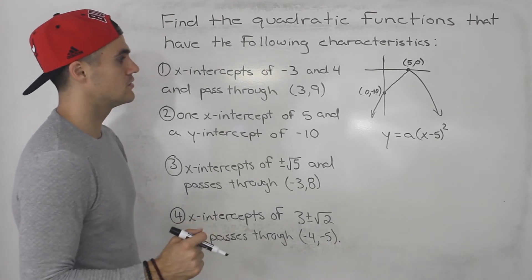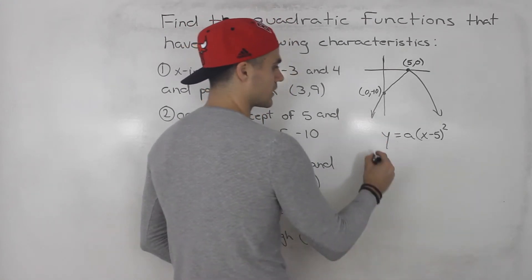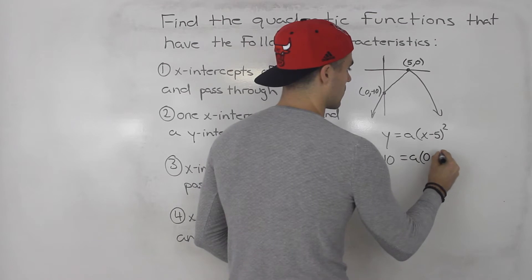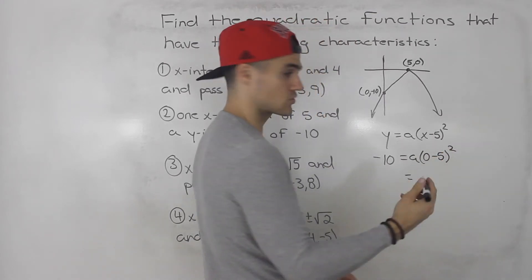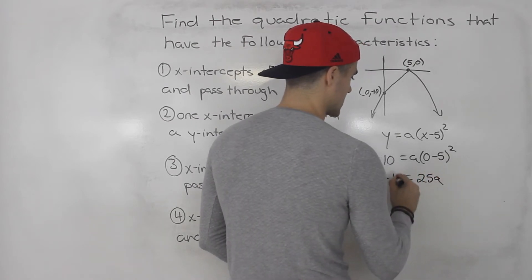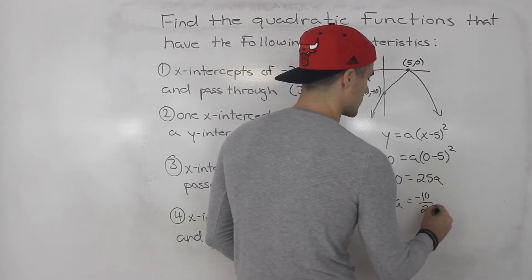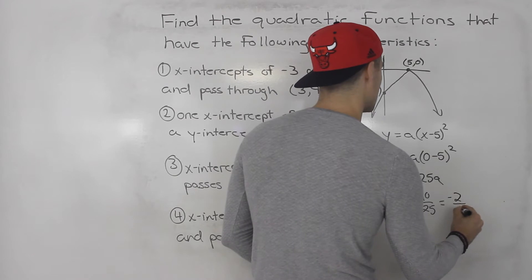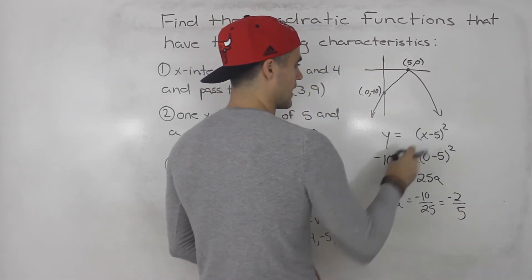From here, solve for the a value by plugging in the coordinate (0, -10): negative ten for y and zero for x. Zero minus five is negative five, squared is 25. So we have negative ten equals 25a, meaning a equals negative ten over 25, which simplifies to negative two over five.